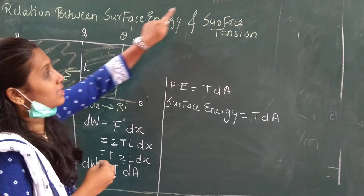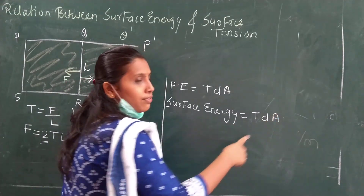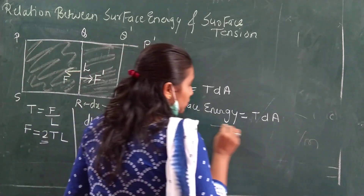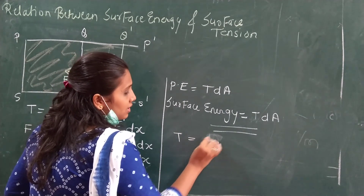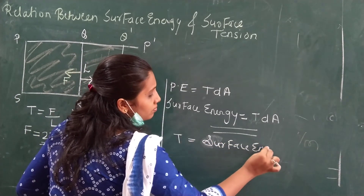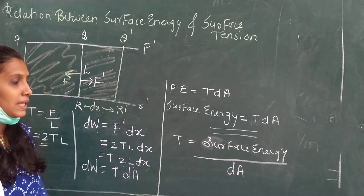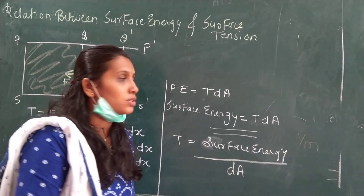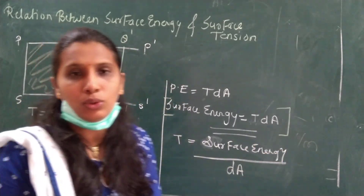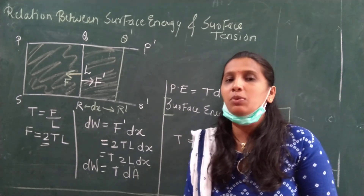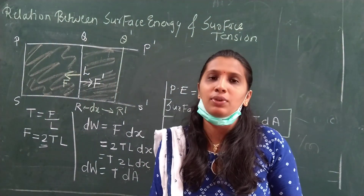From this relation, we can also get another definition of surface tension: T = surface energy per unit increase in surface area. This is the relation between surface energy and surface tension — a small derivation that can be asked for two to three marks in an exam. I hope you have understood this. Thank you.